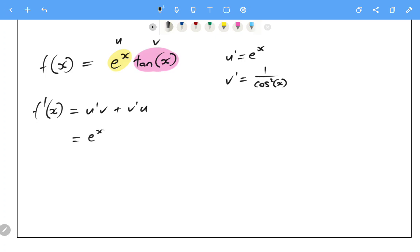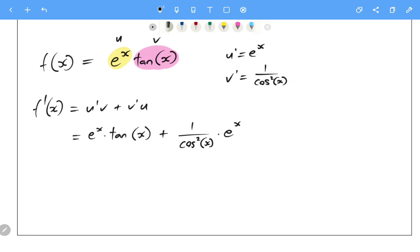What do we get? e to the x. So, u dash times v, which is tan of x, plus the derivative of v, which is 1 on cos squared x, times e to the x, original function u,